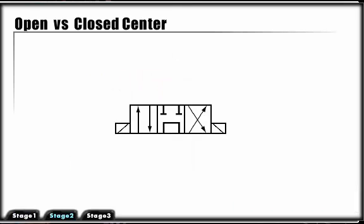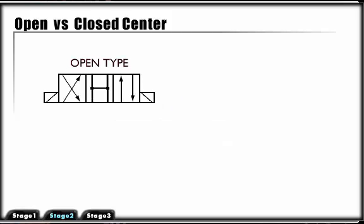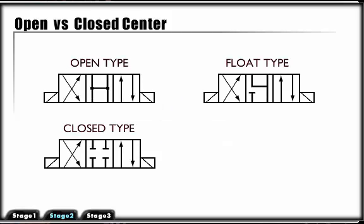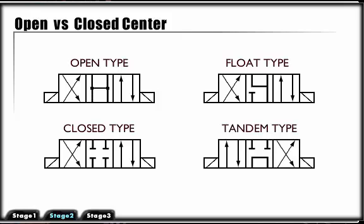A three-position directional control valve incorporates a neutral or center position, which designates the circuit as open or closed depending on the interconnection of the P and T ports, and designates the type of work application depending on the configuration of the A and B ports. The four most common types of three-position valves are open-type, closed-type, float-type, and tandem-type.